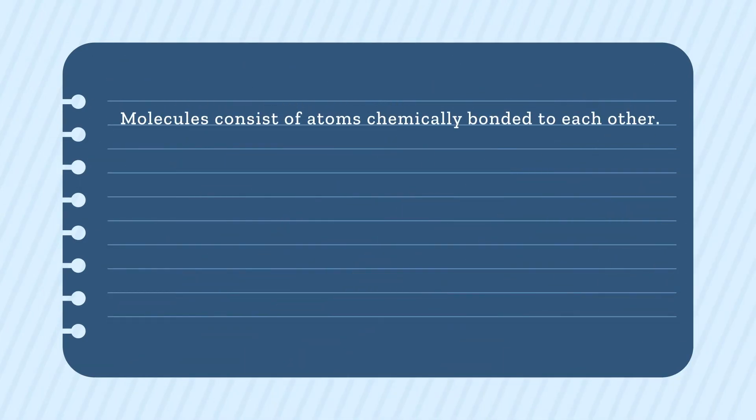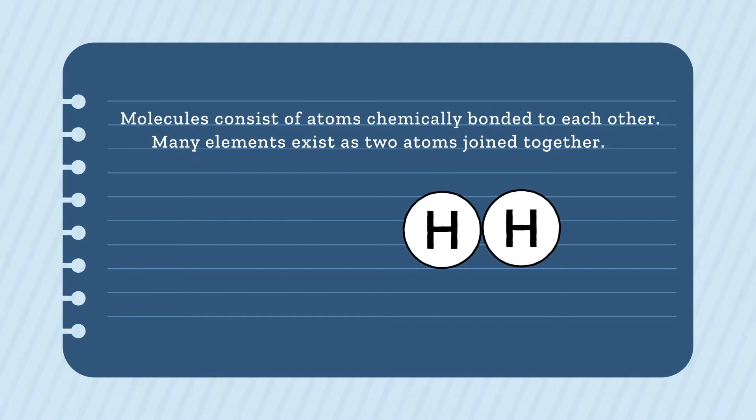When atoms are chemically bonded to each other, they make molecules. Many elements exist as two atoms joined together. Hydrogen, for example, naturally occurs as hydrogen molecules where two hydrogen atoms are chemically bonded together.